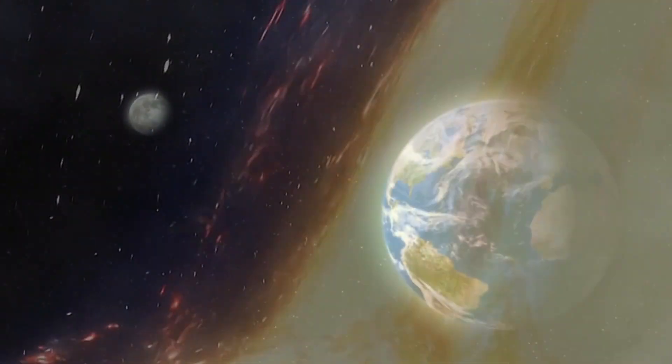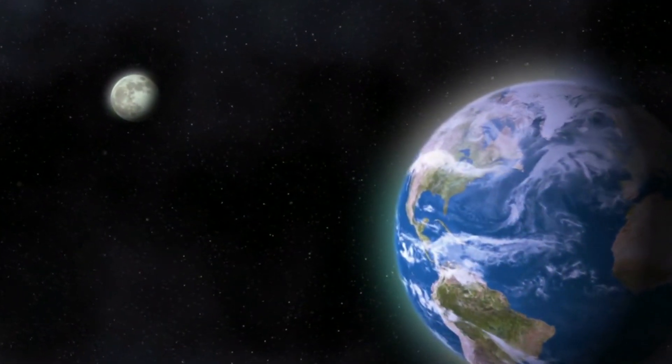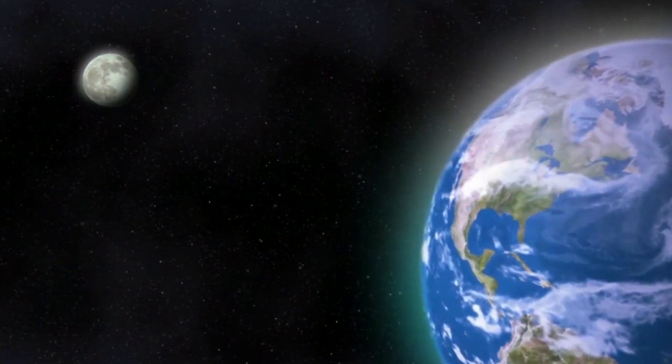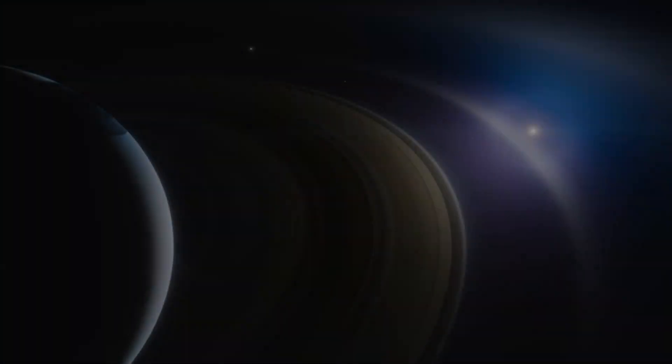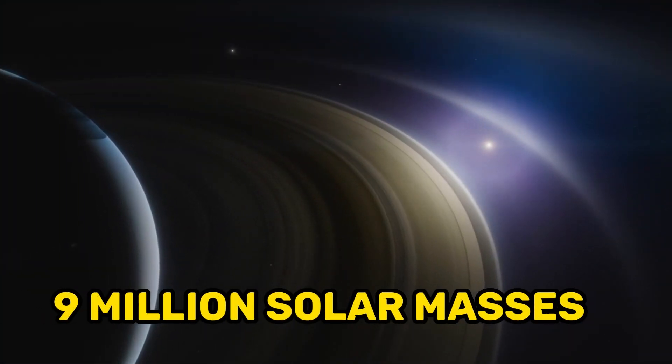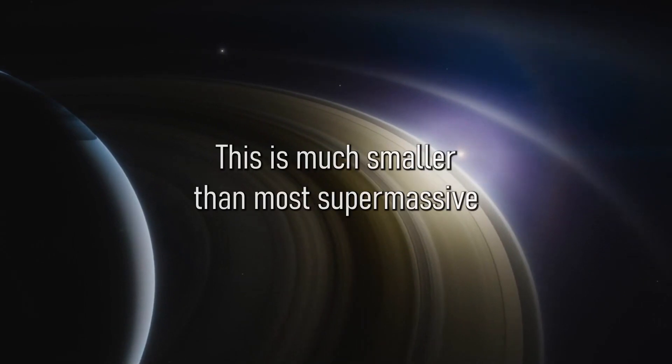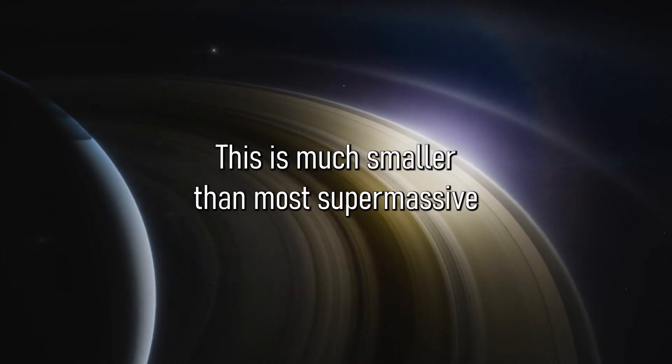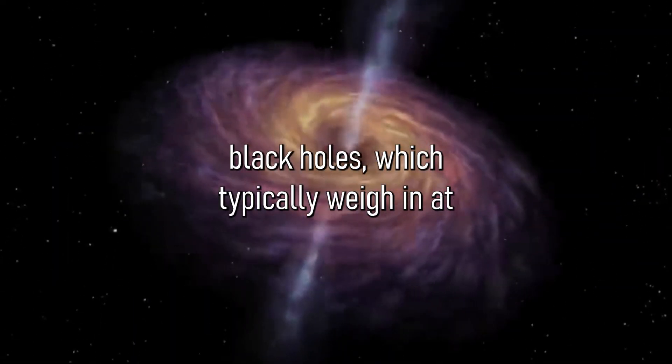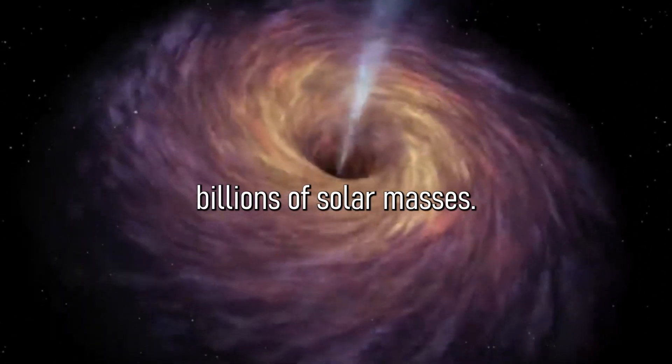This black hole at the center of CEERS 1019 is also considered to be small, at least compared to some other black holes, weighing about only 9 million solar masses. This is much smaller than most supermassive black holes, which typically weigh in at billions of solar masses.